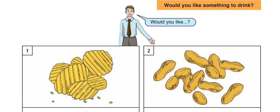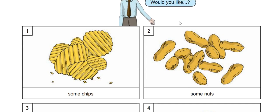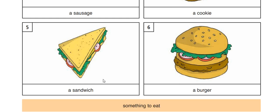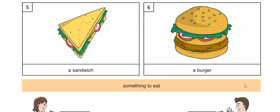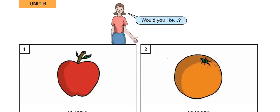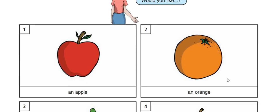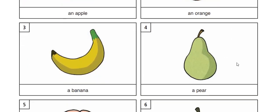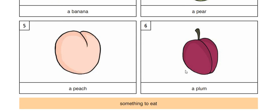Now your turn. Picture one: Would you like some chips? Would you like some nuts? Would you like some sausages? Would you like a cookie? Would you like a sandwich? Would you like a burger? Something to eat? Yes, please. No, thanks. Would you like an apple? Would you like an orange? Picture three: Would you like a banana? Would you like a pear? Would you like a peach? Would you like a plum?